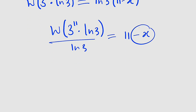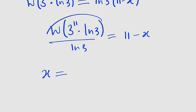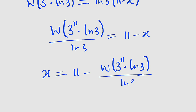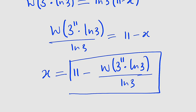Rearranging — since negative x crosses to the left it becomes positive, and the Lambert W term crosses to become negative — we get: x equals 11 minus Lambert W(3^11 · ln 3) divided by natural log of 3. This is the solution to the problem.